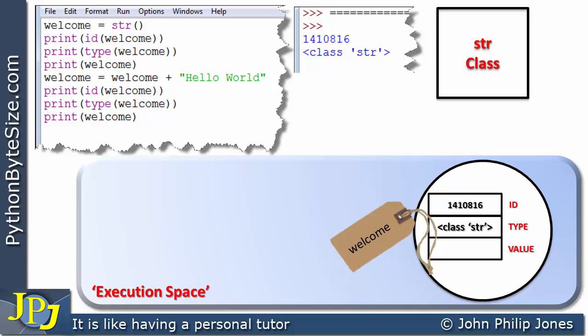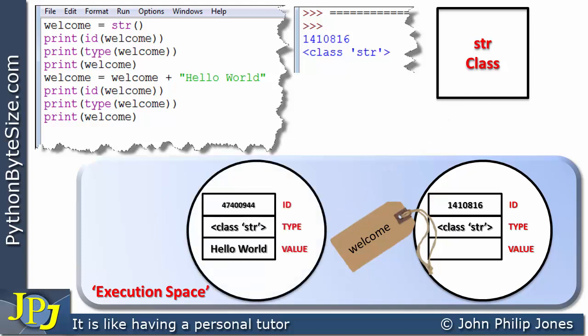So what happens? Another object is created. This object now is actually given the value hello world, which was made up from this literal string here that appeared in the program statement, together with the empty string whose value was taken from here. We can also now see that this particular object has welcome attached to it.